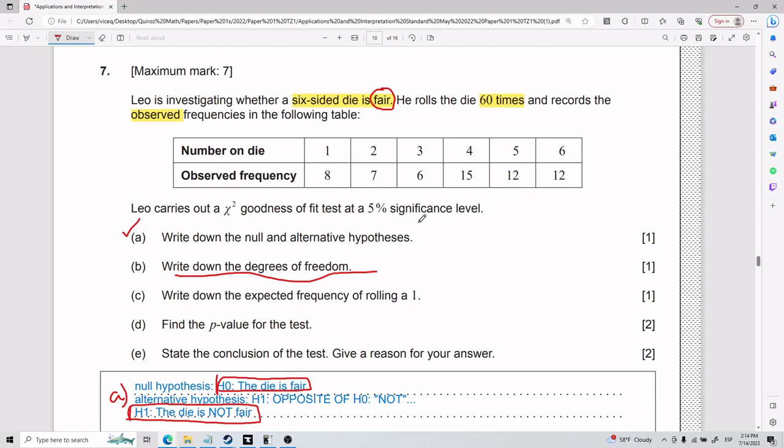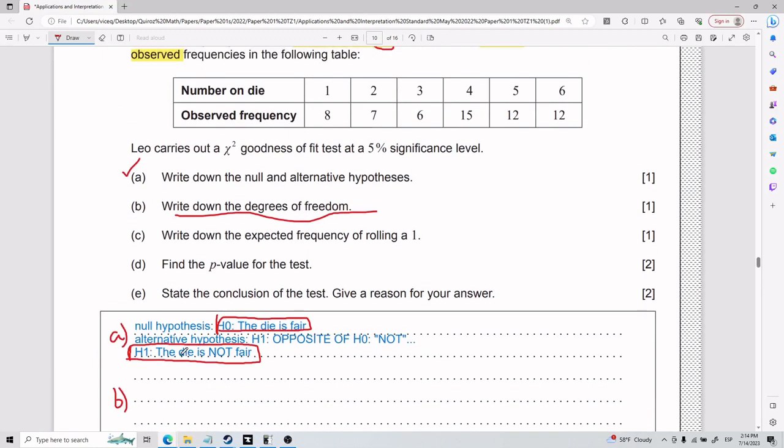So degrees of freedom, I'm just going to share the intuitive idea. Intuitively, it's going to be rows minus one times columns minus one. Just stick to that and you're going to be fine. This is going to be your degrees of freedom. On a more technical level, it helps to know how to carry out your chi-squared test.